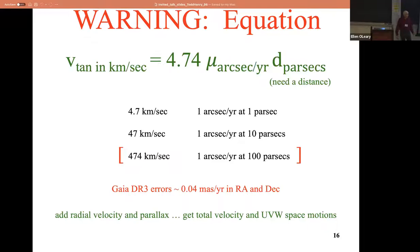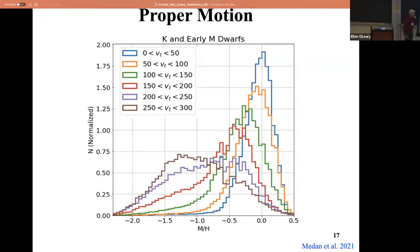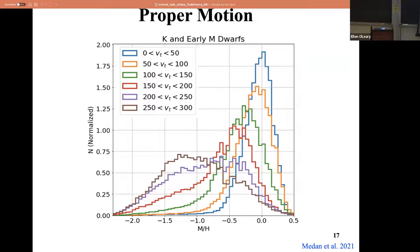If you add a radial velocity and a parallax, you can then get the total space motion - these things called UVW: U is the direction toward the center, V is around the galaxy, and W is up out of the galaxy. These are very useful for putting together things like clusters, because all the stars in a cluster are probably moving together. Here's one example from Ilya Madan, a graduate student - he's plotted metallicity versus tangential velocity, showing clearly that stars with lower metallicities generally have higher tangential velocities, a direct clue as to how the galaxy was formed. Older stars tend to move faster and also tend to be in the halo.